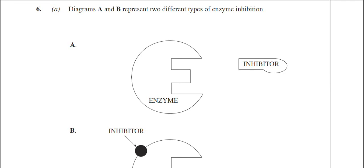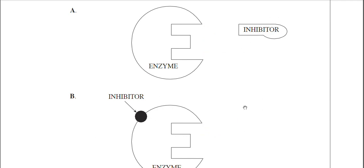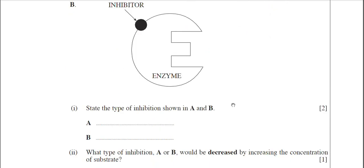We're up to question 6 now on the January 2009 BY-1 paper. This question is about enzyme inhibition, and the examiner has drawn two diagrams to represent the two different types of inhibition. Just to remind you that this part here is the active site of the enzyme, and there you have the two different types of inhibitor. The examiner wants to know the type of inhibition shown by A and B.